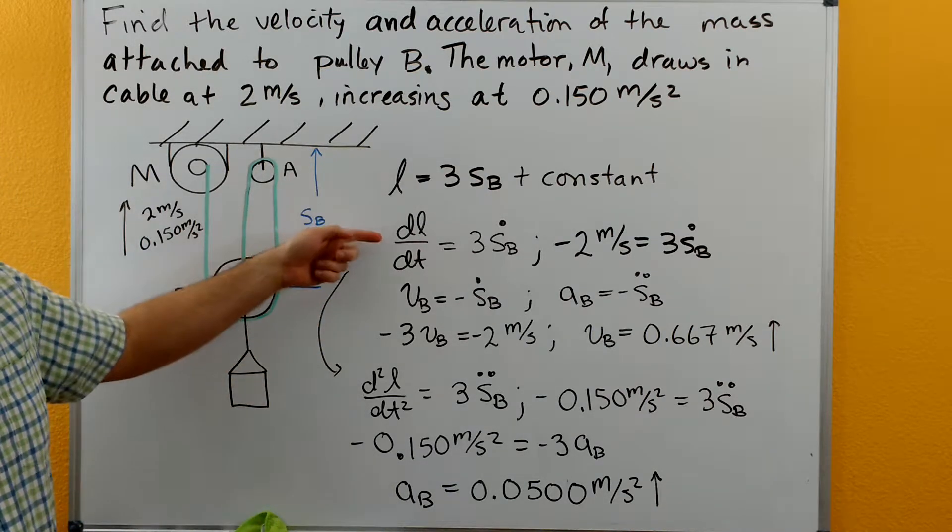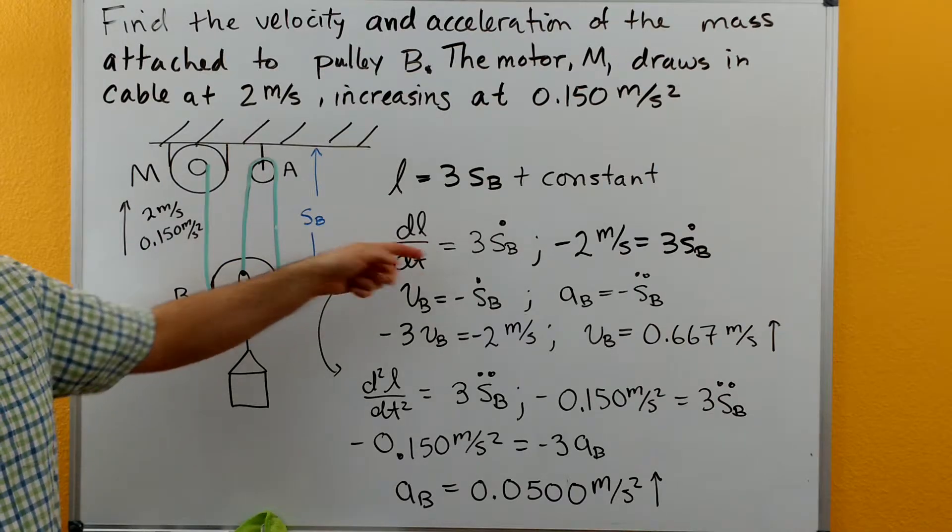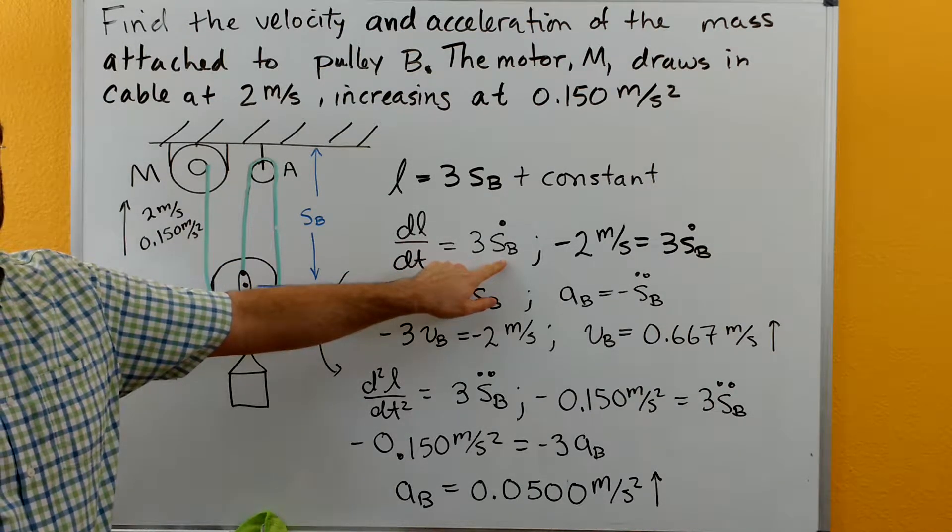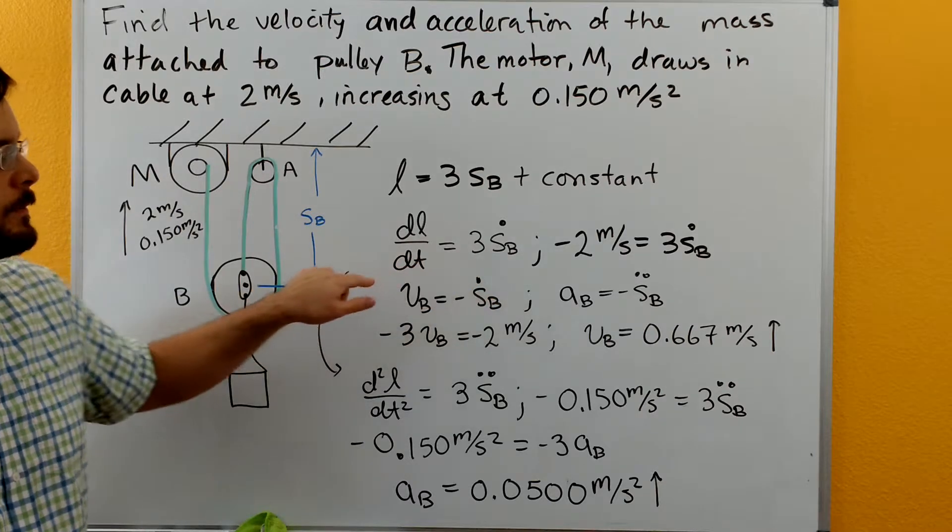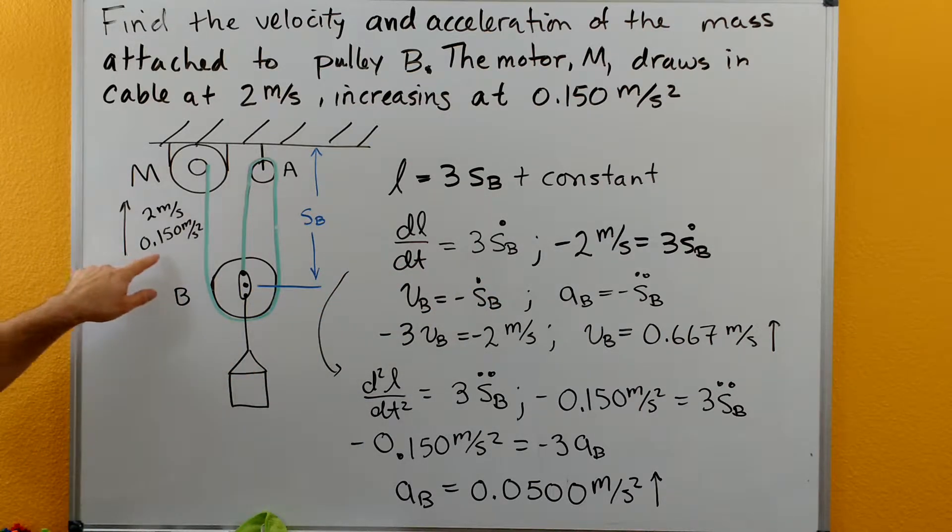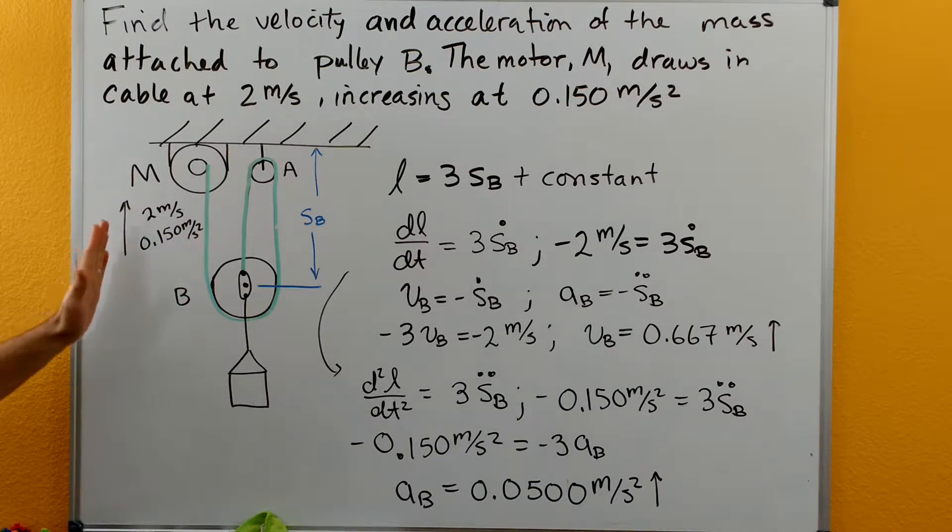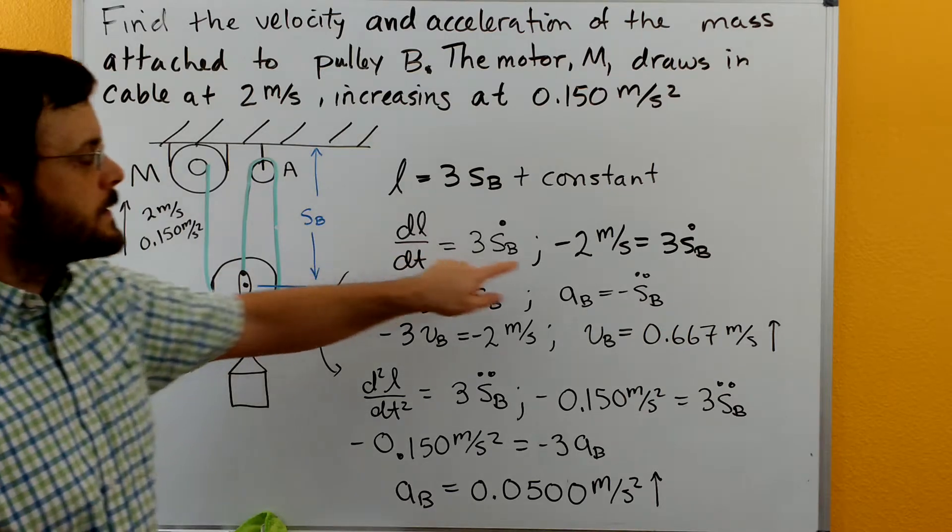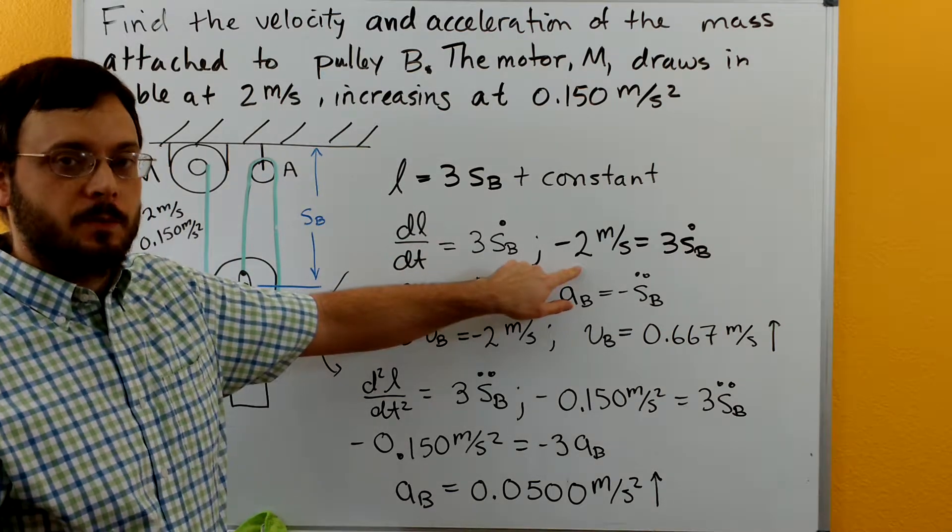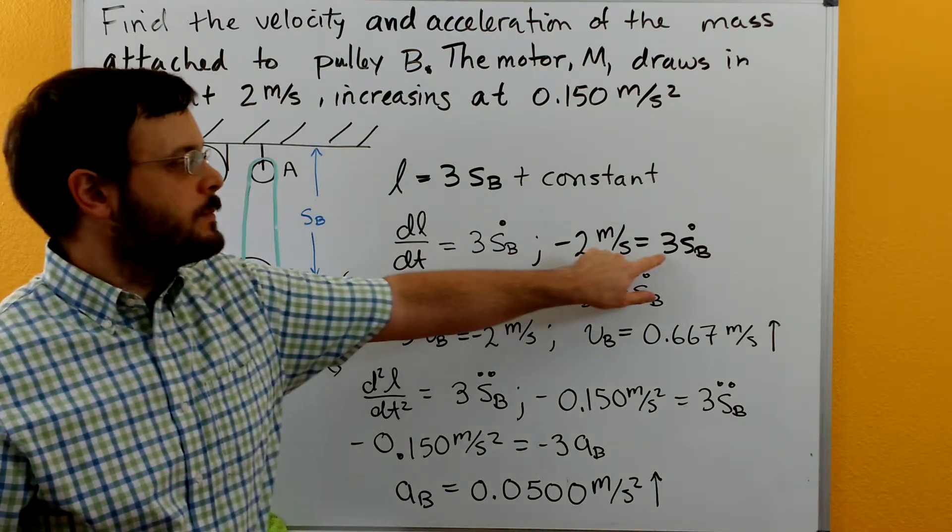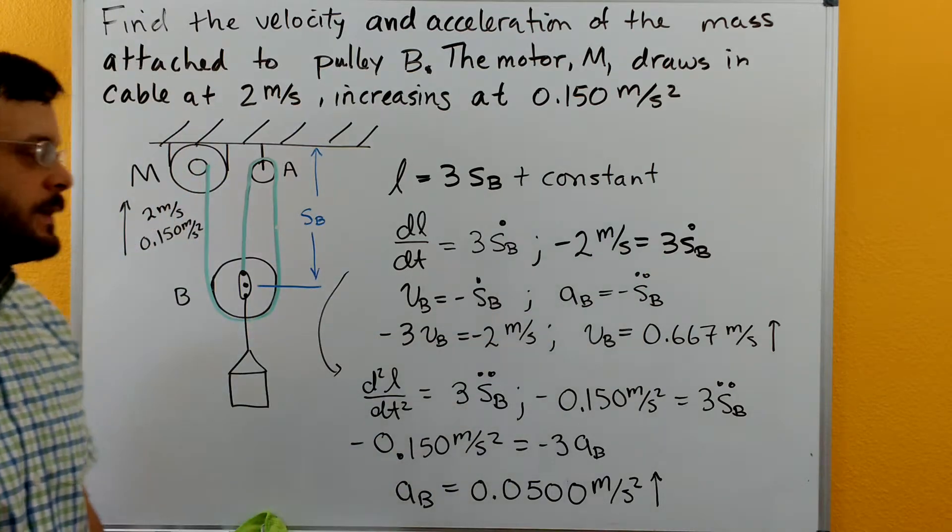We take that derivative, so dL/dt equals three times the time derivative of the position of pulley B. Now we can substitute in. We know this rope must be decreasing because the motor is pulling it in at 2 meters per second. So dL/dt equals negative 2 m/s, and that equals three times SB dot.